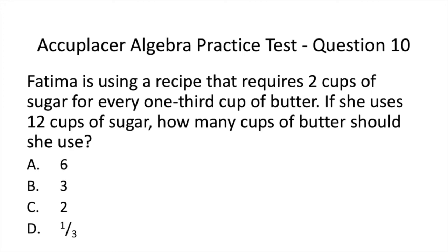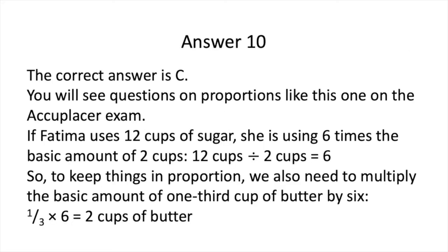Finally, here is Question 10. Now pause to solve. The correct answer is C. You will see questions on proportions like this one on the ACCUPLACER exam. If she is using 12 cups of sugar, she is using 6 times the basic amount of 2 cups, because the original proportion says 2 cups of sugar are required for every 1 third cup of butter. Dividing 12 by 2, she is using 6 times this amount. So to keep things in proportion, multiply 1 third cup of butter by 6. One third times 6 equals 6 divided by 3, which equals 2 cups of butter.